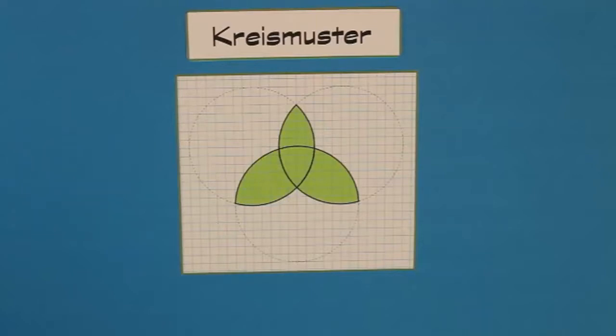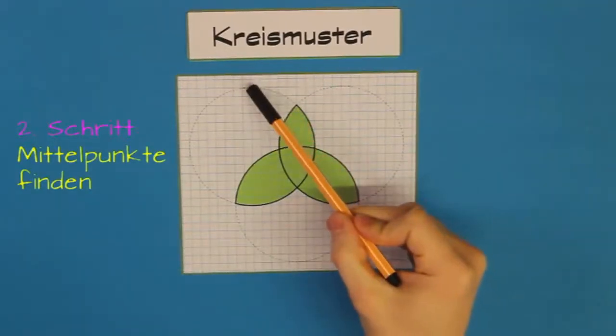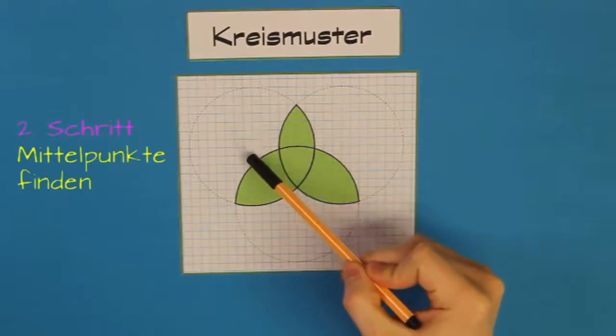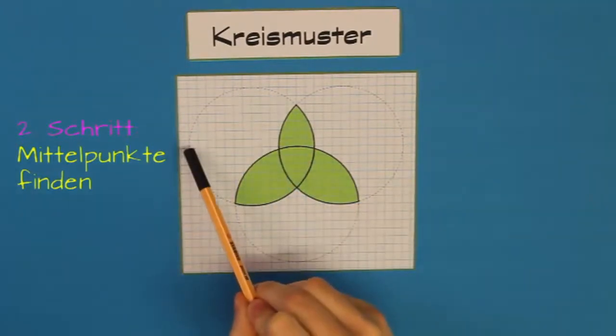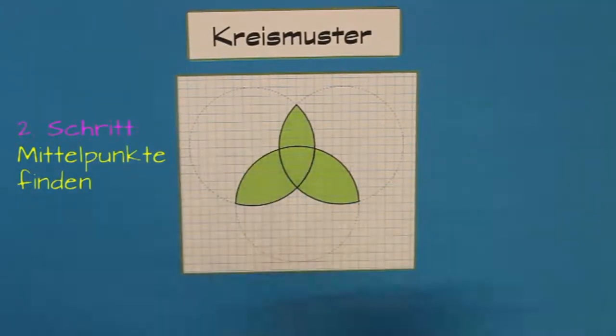Der zweite Schritt, das ist meistens der schwierigste, da muss man nämlich die Mittelpunkte finden. Der ist natürlich, Überraschung, in der Mitte. Das heißt, es ist jetzt nicht so schwierig. Mit ein wenig herumprobieren findet ihr den auch bestimmt. Orientiert euch einfach immer an den Kästchen, dann funktioniert das schon.